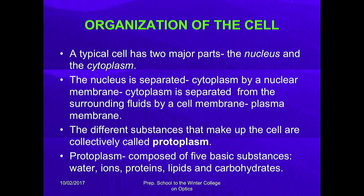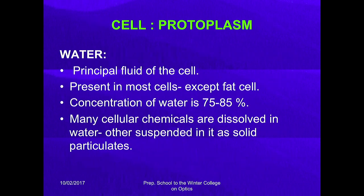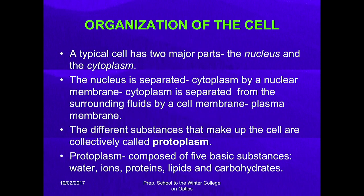An animal cell can basically be divided into two parts: the nucleus, and the outer jelly-like structure called cytoplasm in which all the organelles are present. Water is the principal fluid of the cell, present in most cells except fat cells, at a concentration of 75 to 85 percent. Many cellular chemicals are dissolved in water while others are suspended in it as solid particles — for example, fat is suspended in water rather than dissolved.